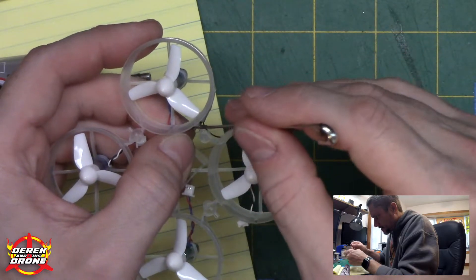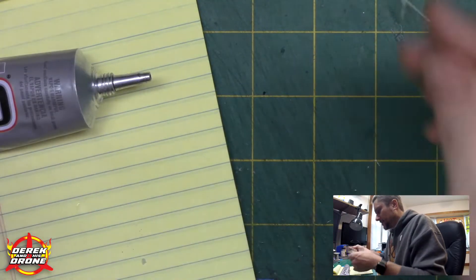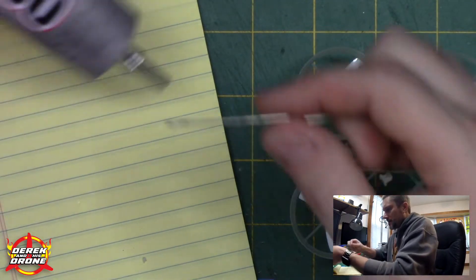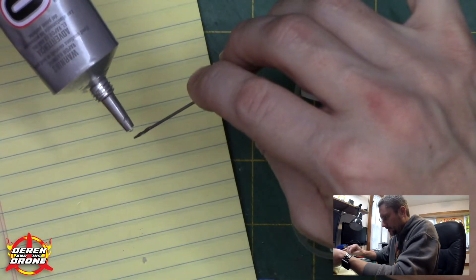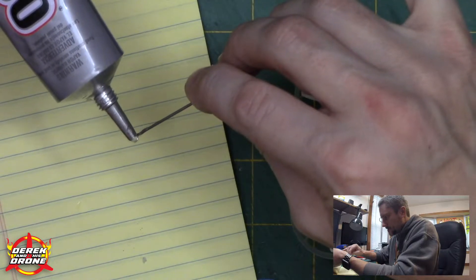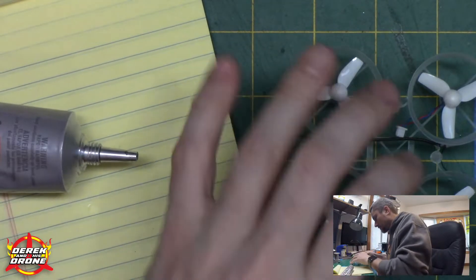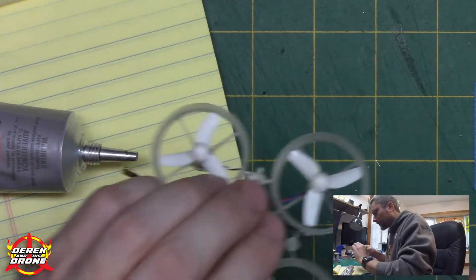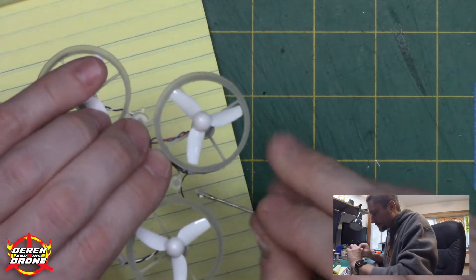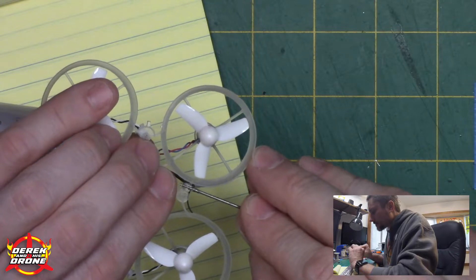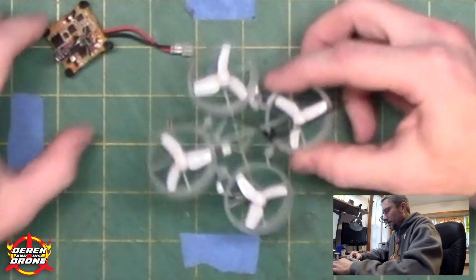I'm going to make sure that's all tucked in there nice and right in that corner. I'm going to put that bead essentially adding the structure to the frame again, but also just really making sure that the antenna is not going to go anywhere.